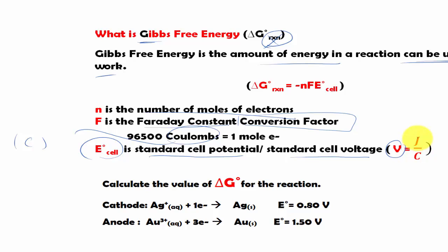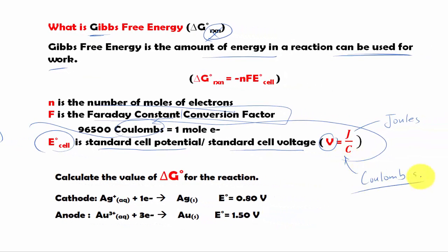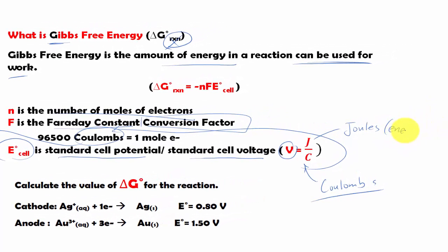And volts is equal to joules over coulomb, which is right here. So this is joule, and this is coulomb. And joule is the unit of energy, of course. And coulomb is a unit of charge.